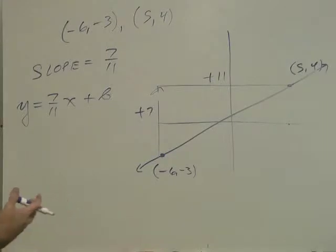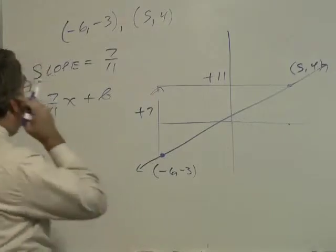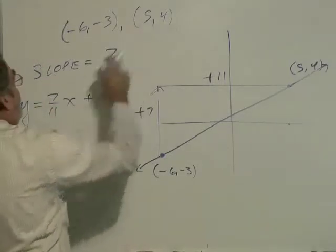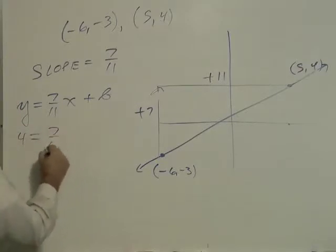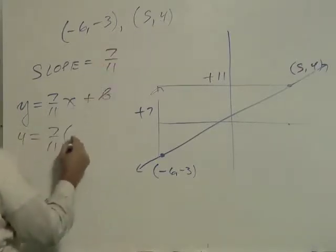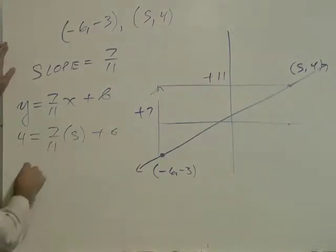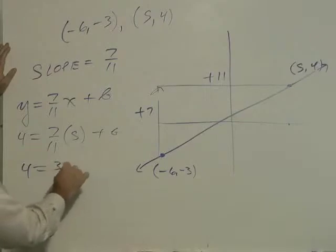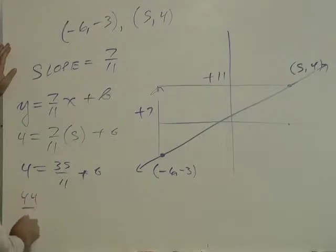As usual, we take one of these pairs of numbers and plug it into here. I think I'll go with the positives. So y is 4 equals 7 over 11 times 5 for x, plus b. Let's multiply this out. It's 4 equals 35 over 11 plus b.